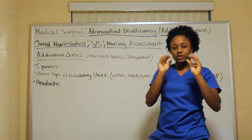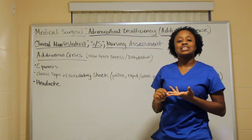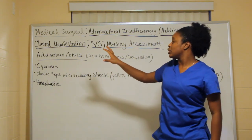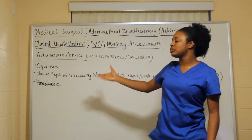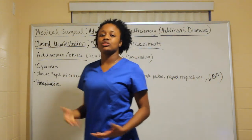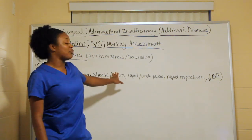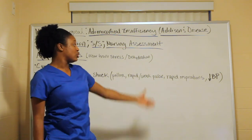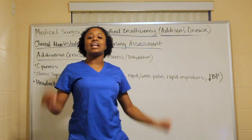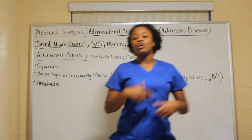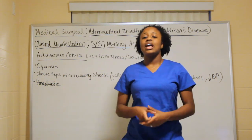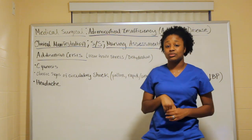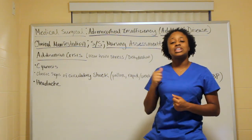In Addisonian crisis, cyanosis is one of the key signs. Classic signs of circulatory shock include pallor, a rapid or weak pulse, rapid respirations, and decreased blood pressure. These let you know the patient is deteriorating very fast, so you need to act quickly.